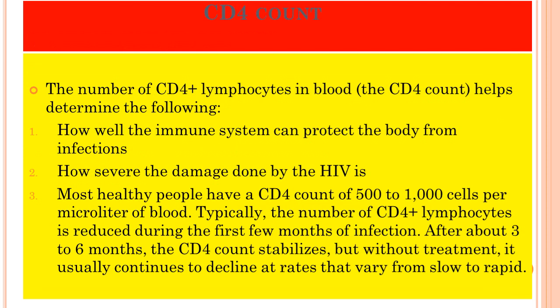Regarding CD4 count: when the number of CD4 lymphocytes — T helper cells — decreases, this number can help determine how well the immune system can protect the body from infection and how severe the damage done by HIV is. Most healthy people have a CD4 count of 500 to 1000 cells per microliter of blood. The number of CD4+ lymphocytes is reduced during the first few months of infection, but after about three to six months it destabilizes, and without treatment usually continues to decline at varying rates.